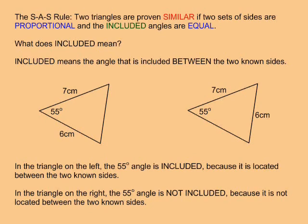The SAS rule states that two triangles are proven similar if two sets of sides are proportional and the included angles are equal.